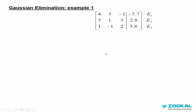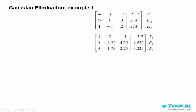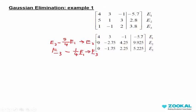So let's start reducing the elements. We'll work from E2 first. To make this 5 into 0, we work with E2 minus 5 over 4 times E1. This constant multiplying the other equation is aimed to reduce the element into 0. And for E3, we work with E3 minus 1 over 4 times E1. So now we get 2 of these as 0.